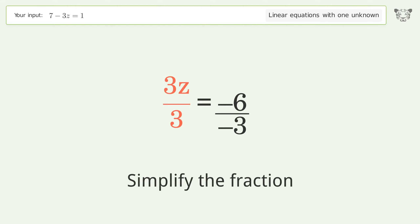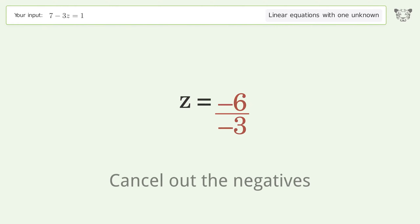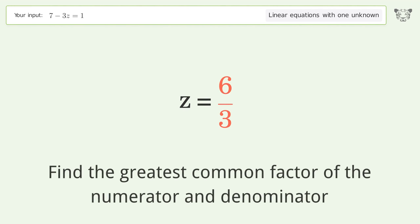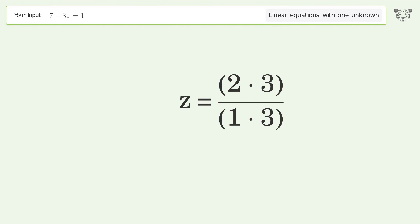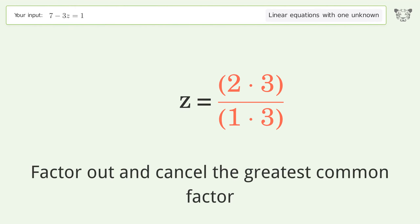Simplify the fraction. Cancel out the negatives. Find the greatest common factor of the numerator and denominator, then factor out and cancel the greatest common factor.